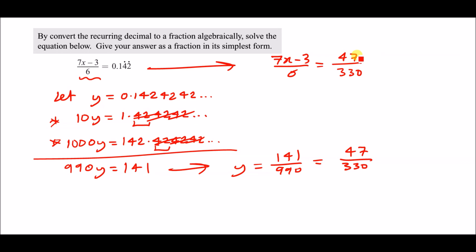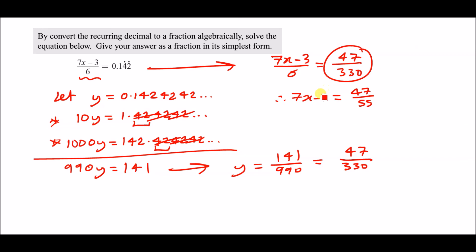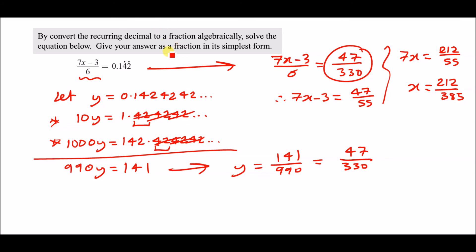Solve normally: multiply both sides by 6 to get 7x minus 3 = 47 over 55. Add 3 to both sides: 7x = 47 over 55 plus 3 = 212 over 55. Divide by 7: x = 212 over 385. That's the answer as a fraction in simplest form.